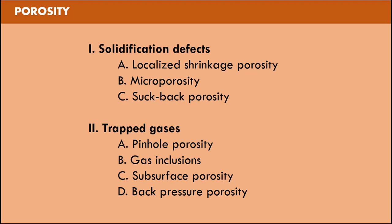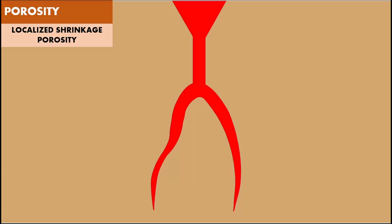The solidification defects can be a localized shrinkage porosity, microporosity or a suck-back porosity while the trapped gases can lead to a pinhole porosity, gas inclusion porosity, subsurface porosity and back pressure porosity. Let's see all these types of porosities one by one. First let's see about the localized shrinkage porosity.